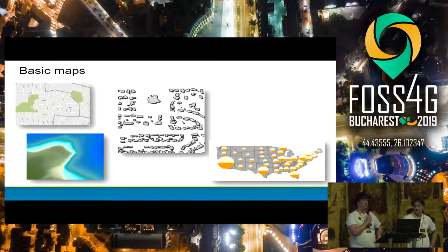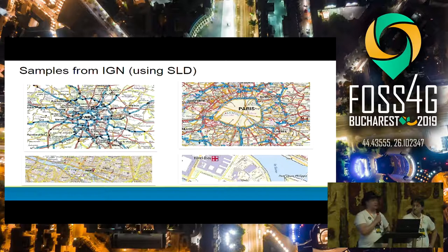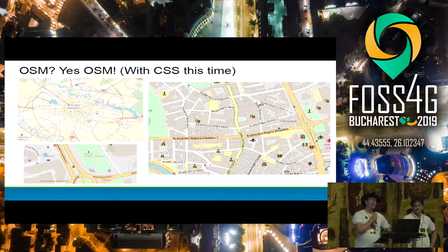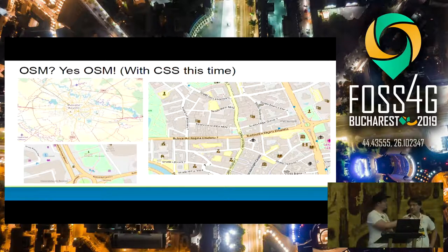Maps everywhere. GeoServer is well-known, and we've got lots of examples in our manuals about how to produce basic maps, but you can actually do a lot better. Here are some examples from IGN done using SLD files, probably thousands of lines long. And here are some examples of visualizing OSM, this time done with CSS, probably only hundreds of lines long.